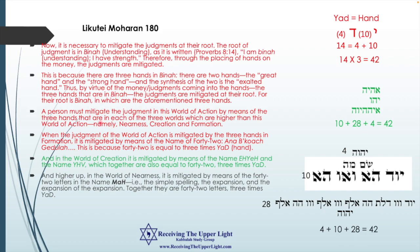Bina comes from the left side — the side of duality: expansion and retraction. It expands but also contracts itself, creating a restriction of the light to create everything else below — the seven days, seven Middot or seven forces we need to correct. The world of Beriah — the world of creation — is mitigated by the name Ehyeh and the name Yod-Heh-Vav. Yod-Heh-Vav equals 15 plus 6, which is 21. Add that to Ehyeh's value of 21, and together they equal 42 — three times Yad.